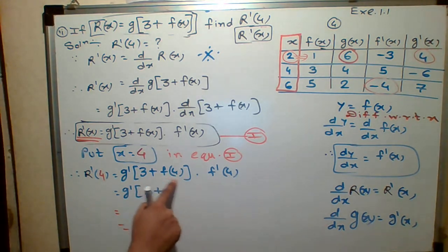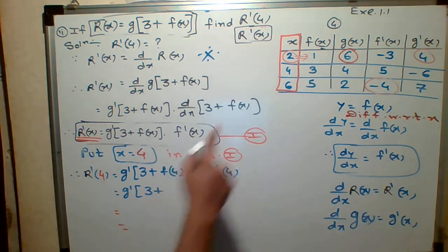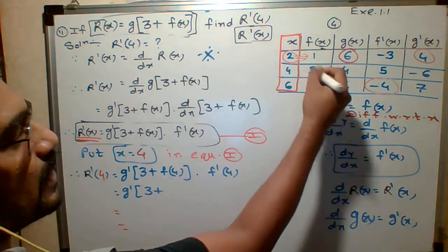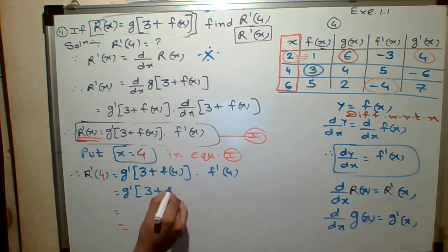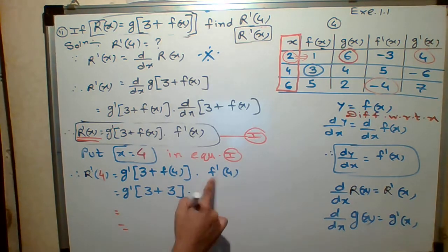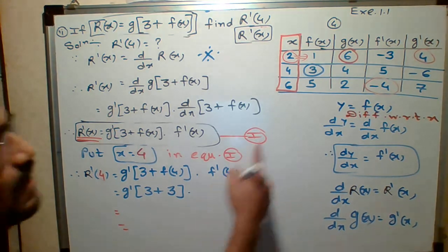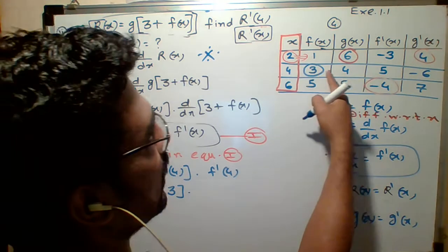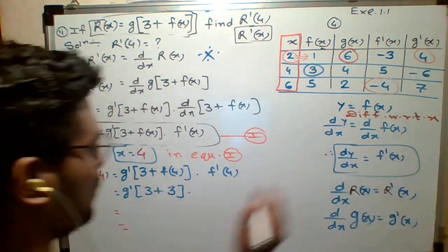So will you tell me what is F of 4? F of 4 means when X is 4, F value is how much? Who will tell me? 3. F dash of 4. F dash. When X is 4, F dash value here, how much? 5.